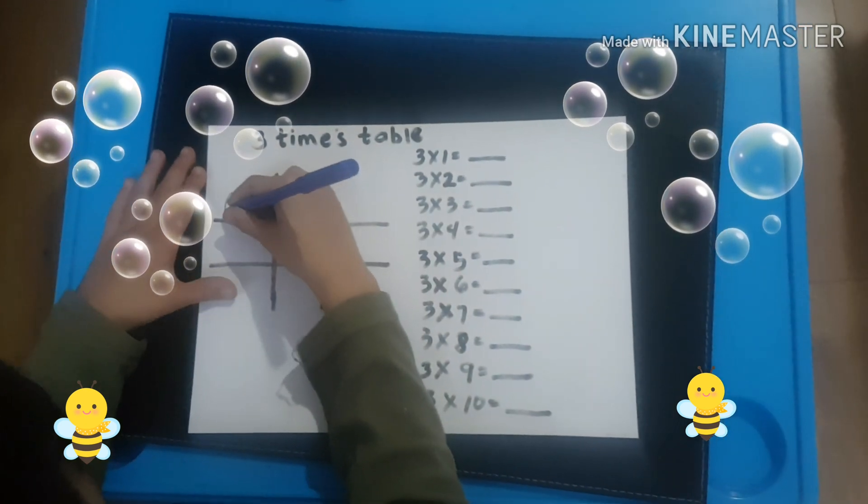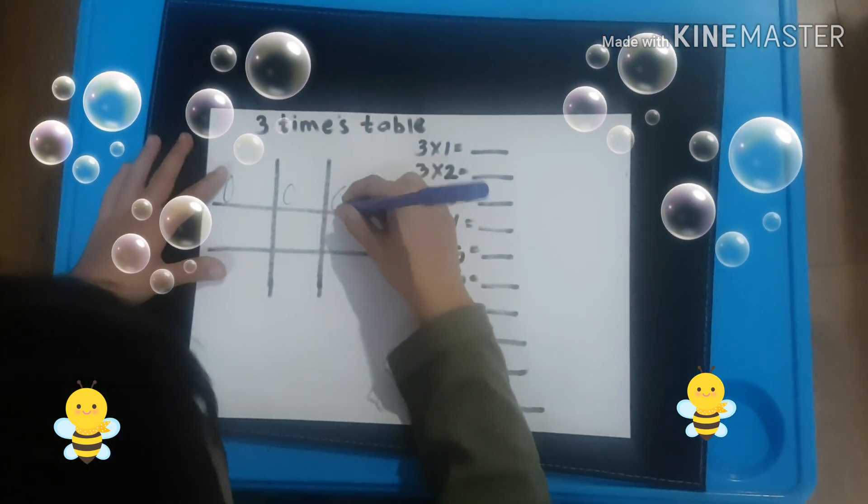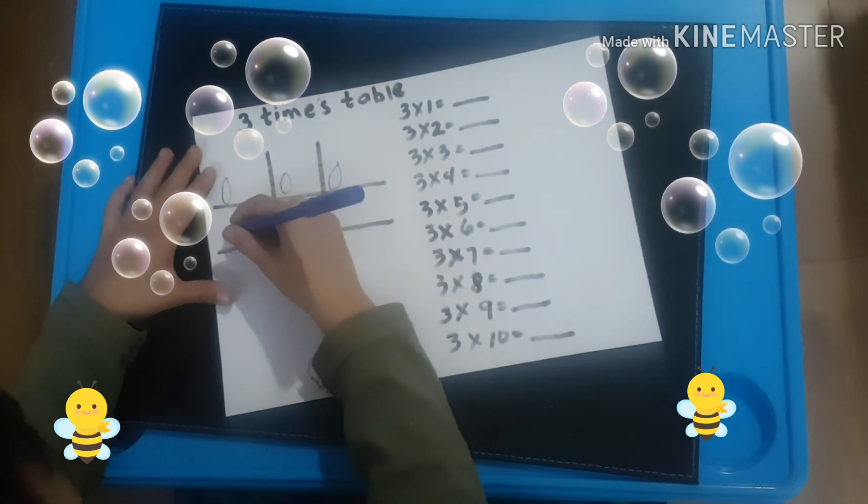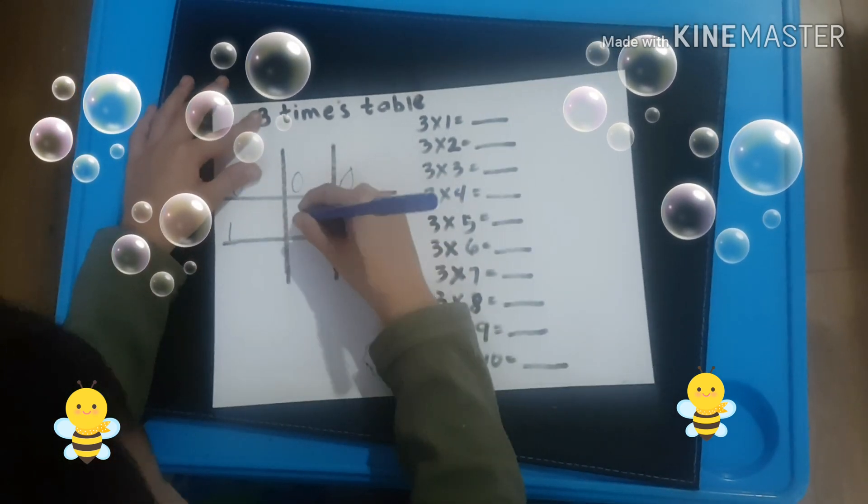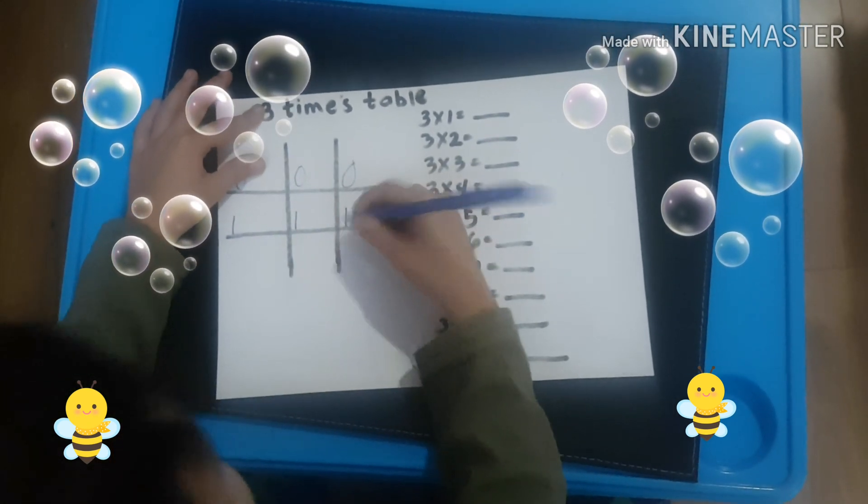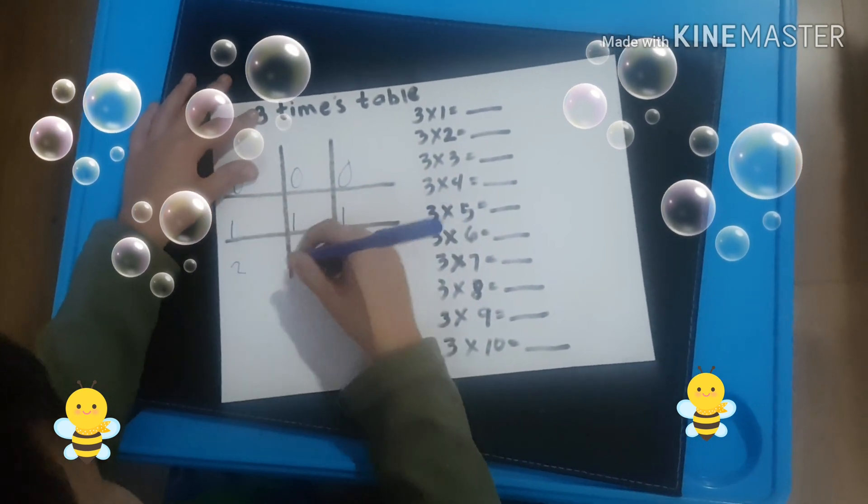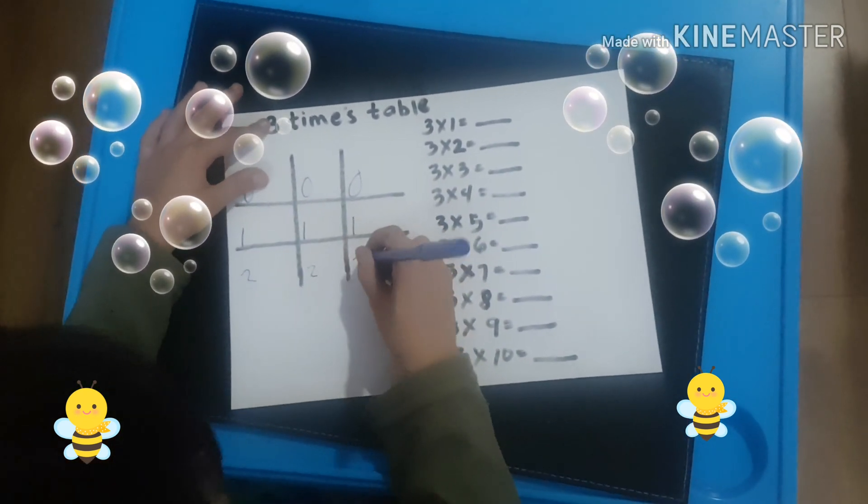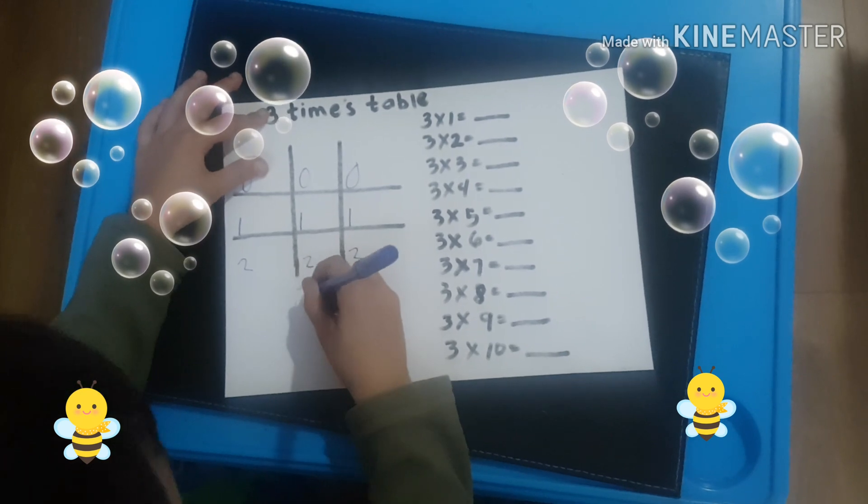So you do 0, 0, 0, and then next you do 1, 1, 1. Then you write 2, 2, 2, and then you write 3 at the bottom.